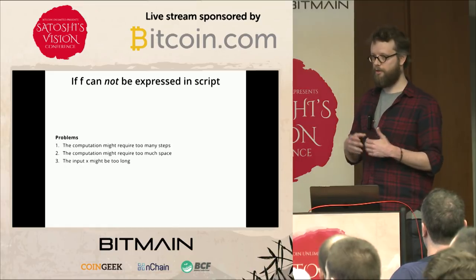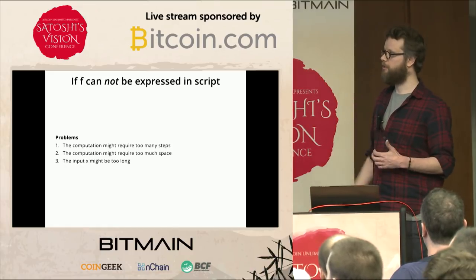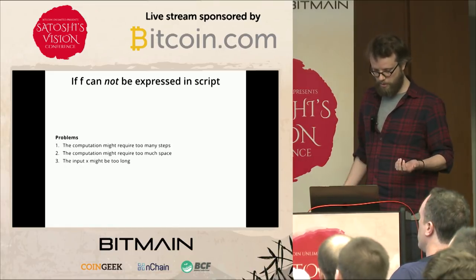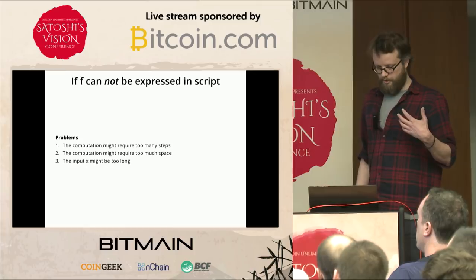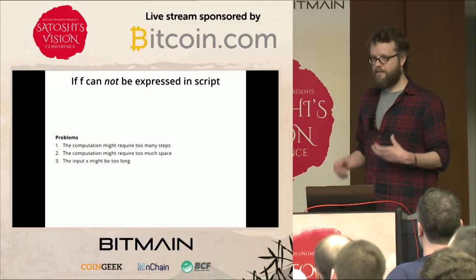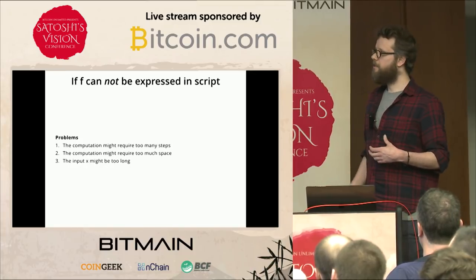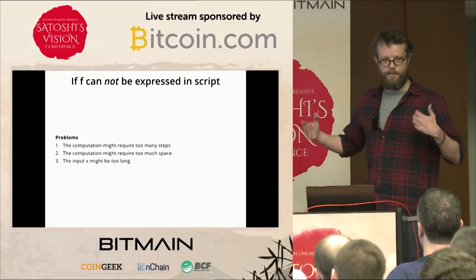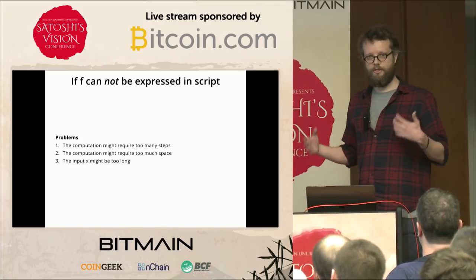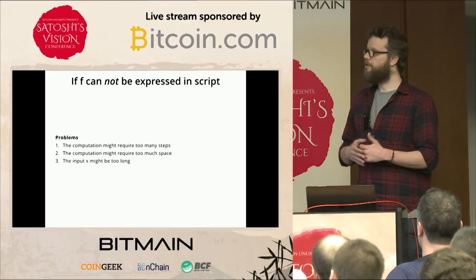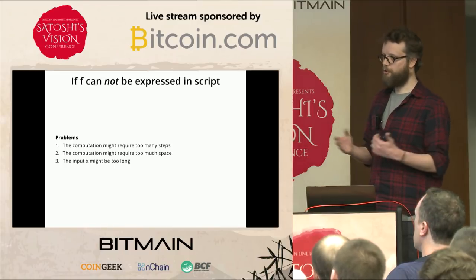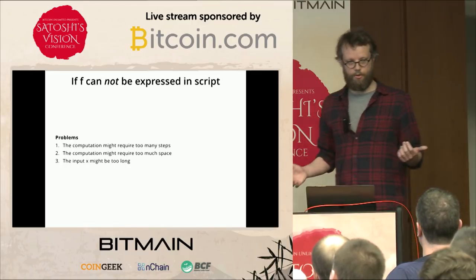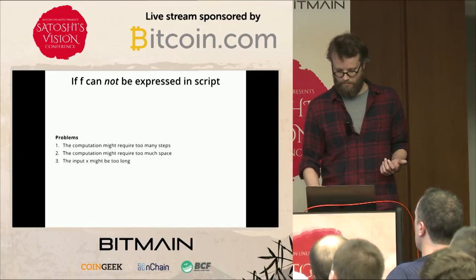I'll introduce a little visual notation: these boxes represent Bitcoin transactions, the top part is the input scripts, the bottom is the output scripts, and the arrow indicates that this input spends that output. Now, what if f is a more complicated function that can't be encoded in Bitcoin script? There are three problems: the computation might require too many steps, too much space, or the input x itself might be too long to fit in a single transaction.